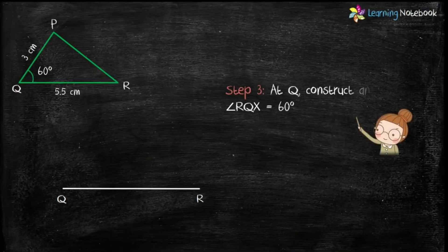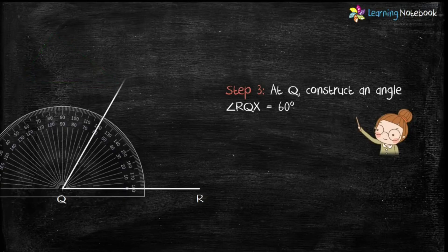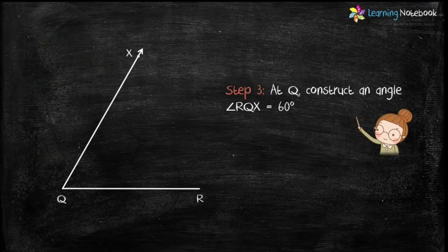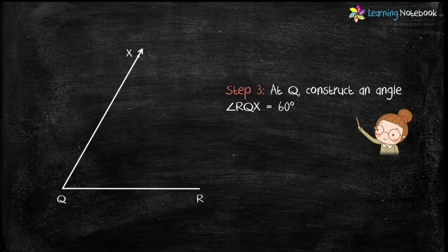Now students, in step 3, at Q, construct an angle RQX which is equal to 60 degree with the help of a protractor.